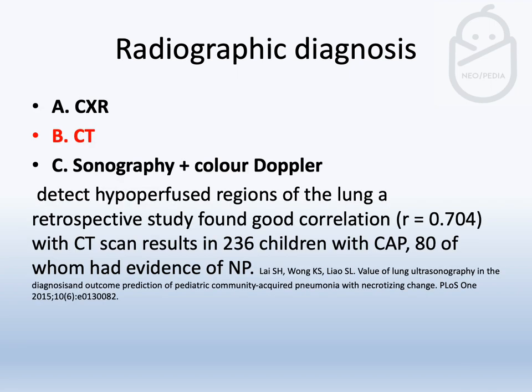For radiographic diagnosis, CT scan is considered the gold standard and the main diagnostic radiological investigation. Sonography with color Doppler can detect hypoperfused regions of the lungs, and some studies have shown good correlation between CT scan results and ultrasound in diagnosing necrotizing pneumonia. Chest X-rays will show consolidation like any other pneumonia, but can also show cavitation, as we will see in the next few X-rays.